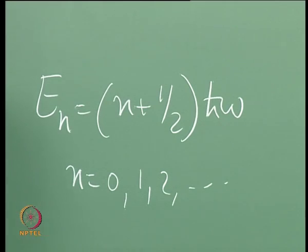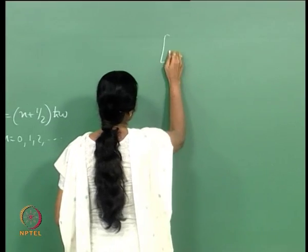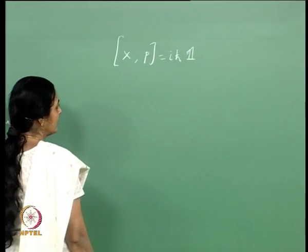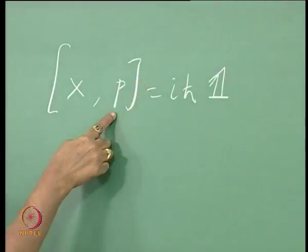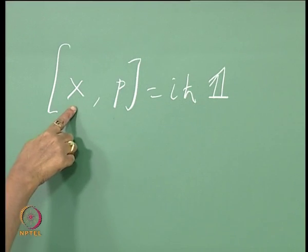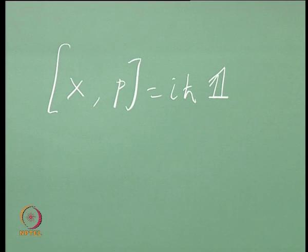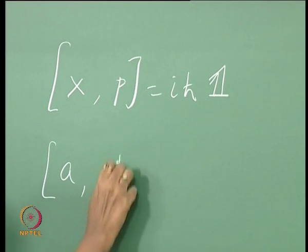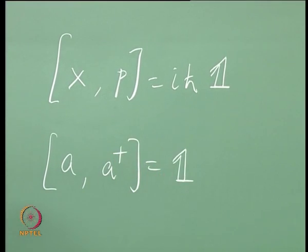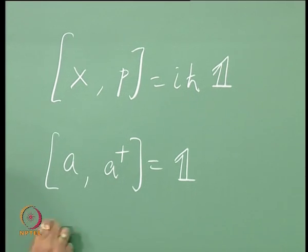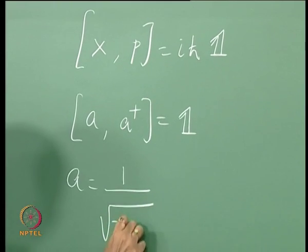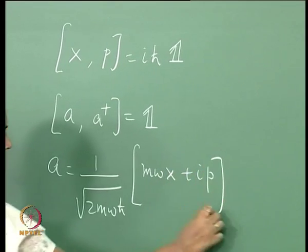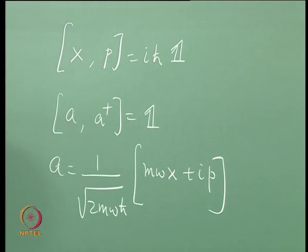Basically, we started with the commutation relation. The commutator of x with p was i h-cross times the identity, where x, p — the linear momentum conjugate to x — and the identity are all operators. This translated to a, a dagger equals the identity, where a itself was defined in terms of x and p as linear combinations, and a dagger was the Hermitian conjugate of a.